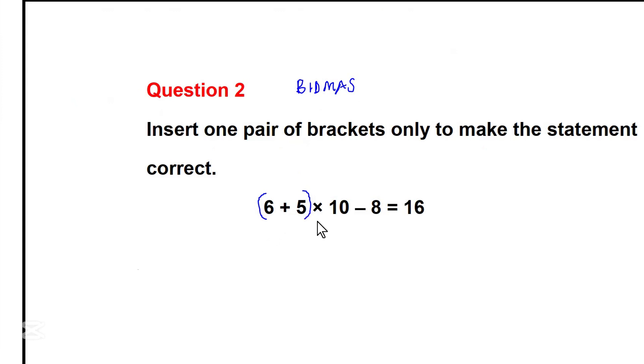Let's verify if this will give us, if the answer will be 16. 6 plus 5 is 11. 11 times 10, minus 8. According to BIDMAS, we have to do multiplication first. So, I'm going to multiply 11 by 10 to give 110 minus 8. And of course, 110 minus 8 will give us 102, which is not correct.